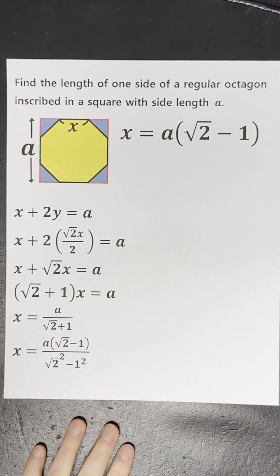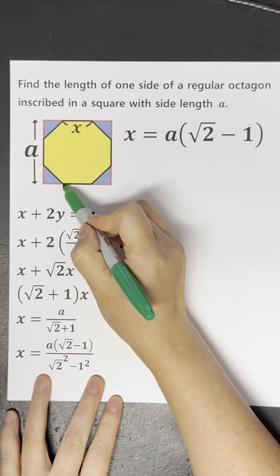Find the length of one side of a regular octagon inscribed in a square with side length A.